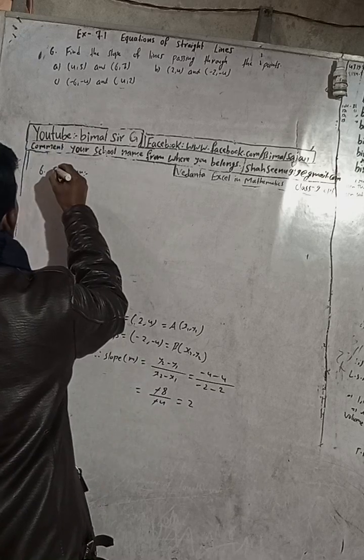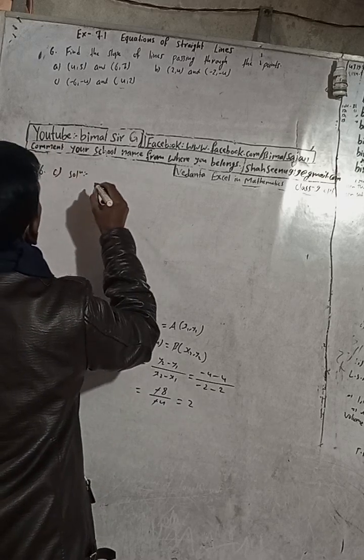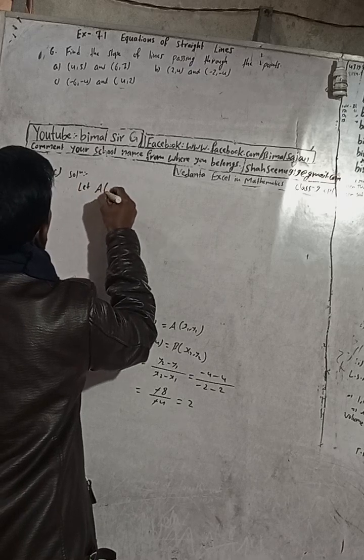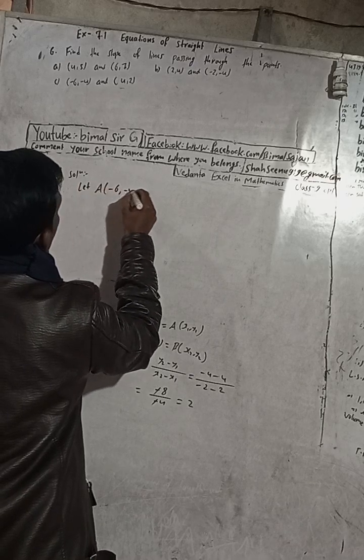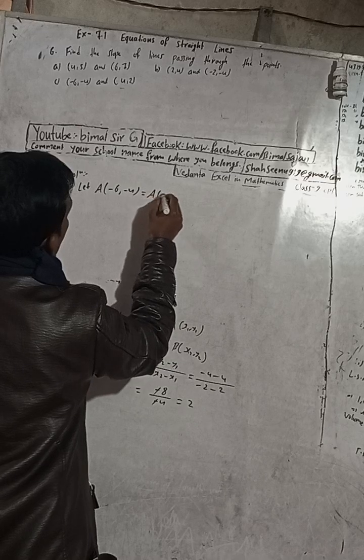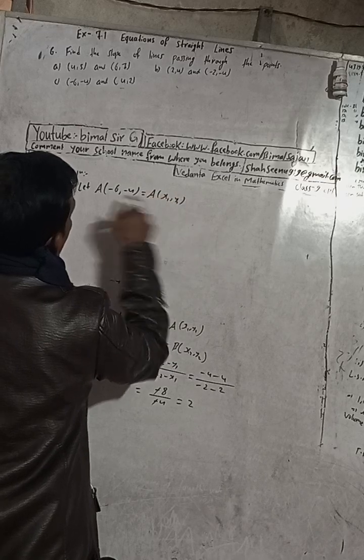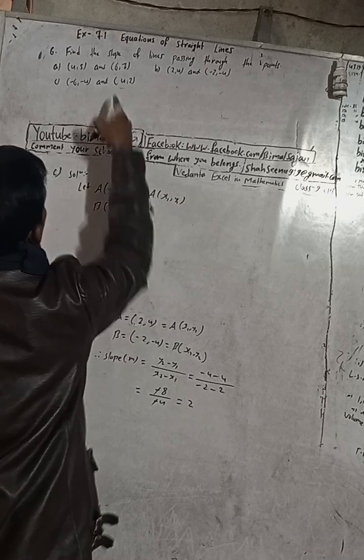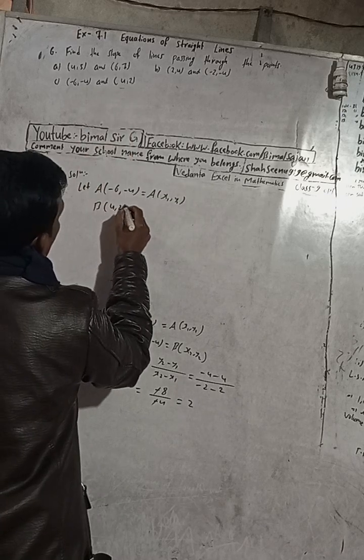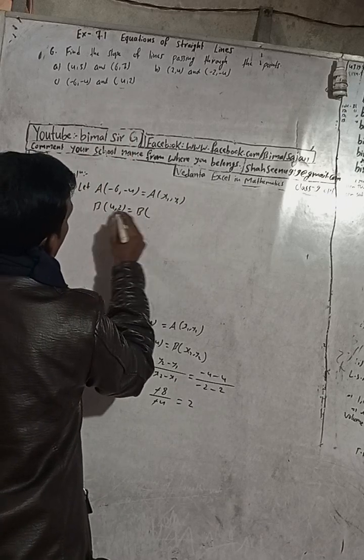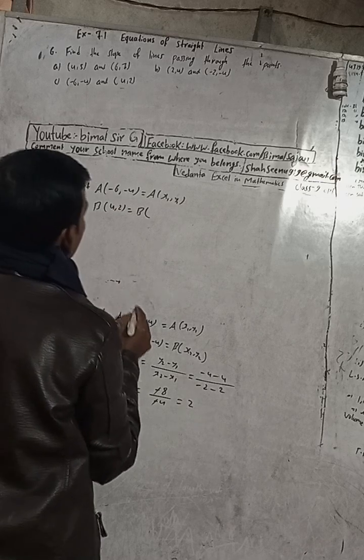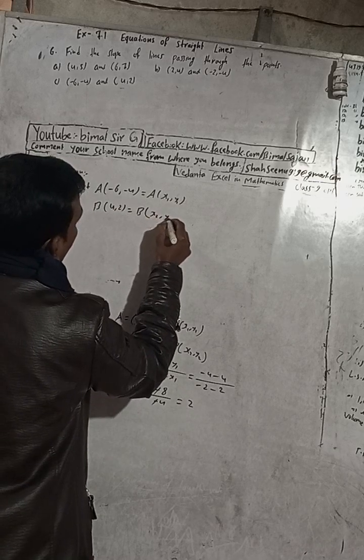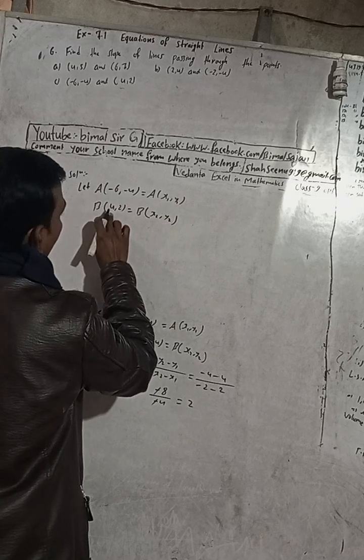Part c: Let A equal (-6, -4). That means this is x1 and this is y1. And B equals (4, 2). This is B equals (x2, y2). So this is x2 and this is y2.